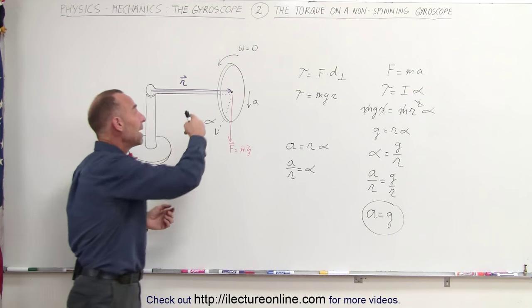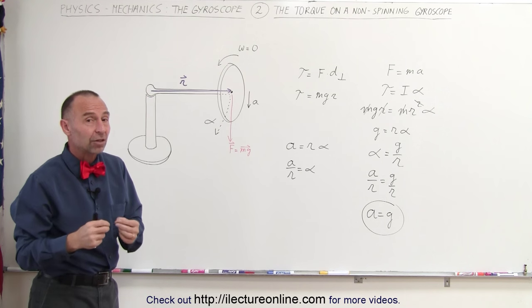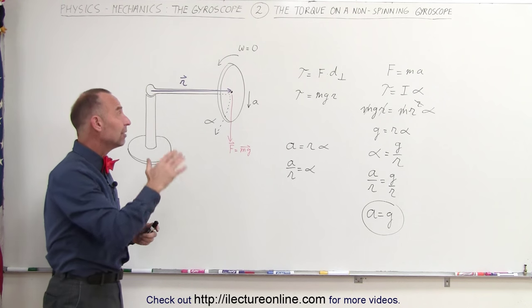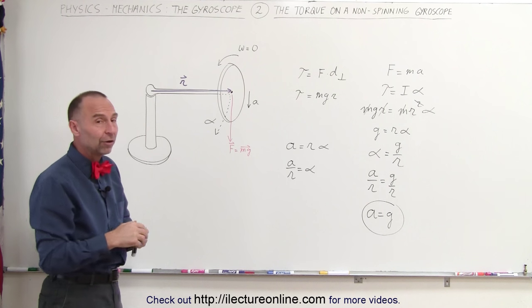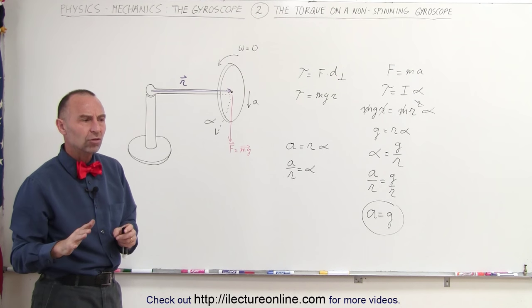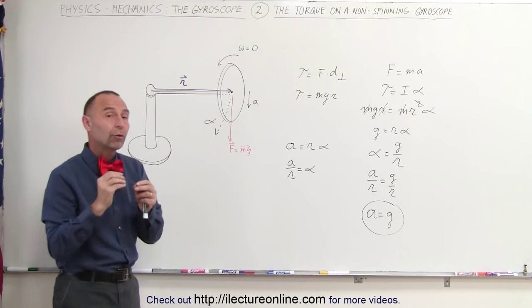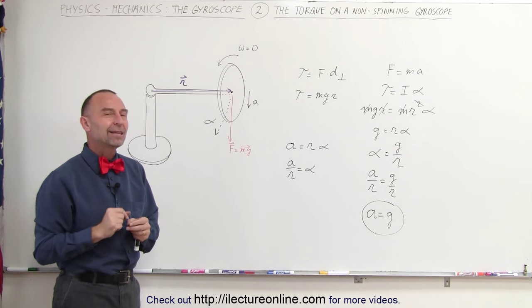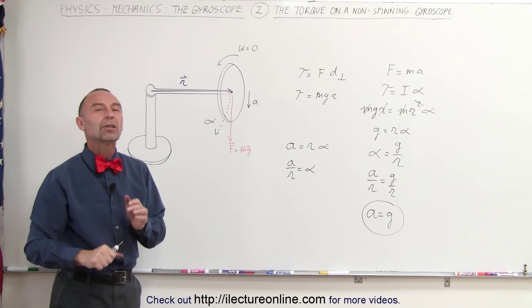Now what happens when we make the gyroscope spin at some angular velocity? If the angular velocity gets very large, then the gyroscope will have a very large angular momentum. And if it has a very large angular momentum, remember that the angular momentum doesn't like to change because momentum is always conserved unless there's a force acting on it. Let's see in the next video when we start making the disk spin, some very strange things begin to happen.